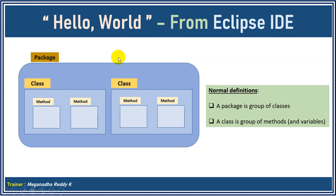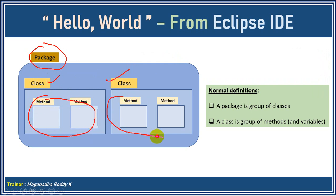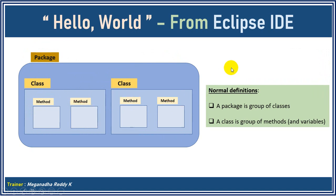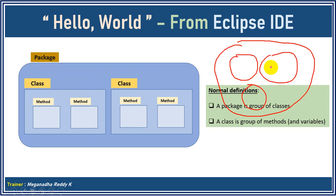Now in Java, before we create a class, how things are organized: a package in Java is a group of classes, and a class is a group of methods. It's something like when we have a country — a country will have a group of states, and states will have a group of cities. So why classify like that? The reason they are grouped into states is for better organization.